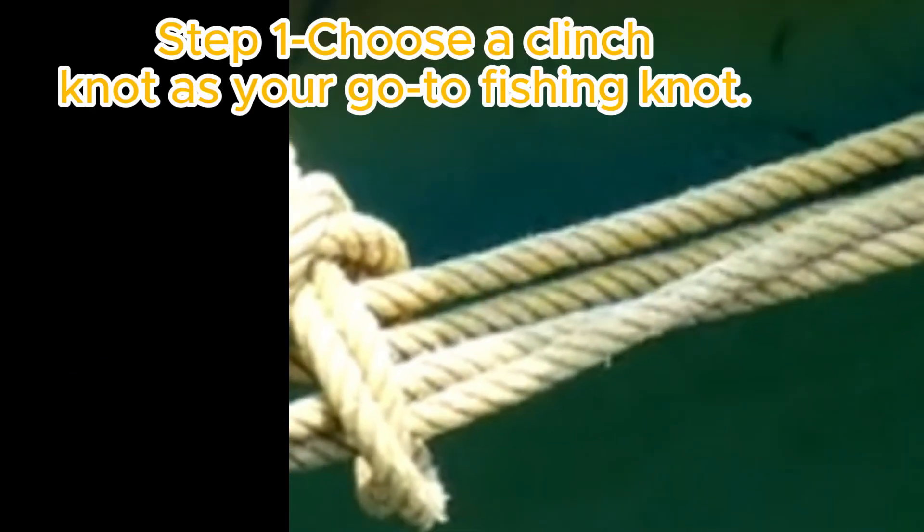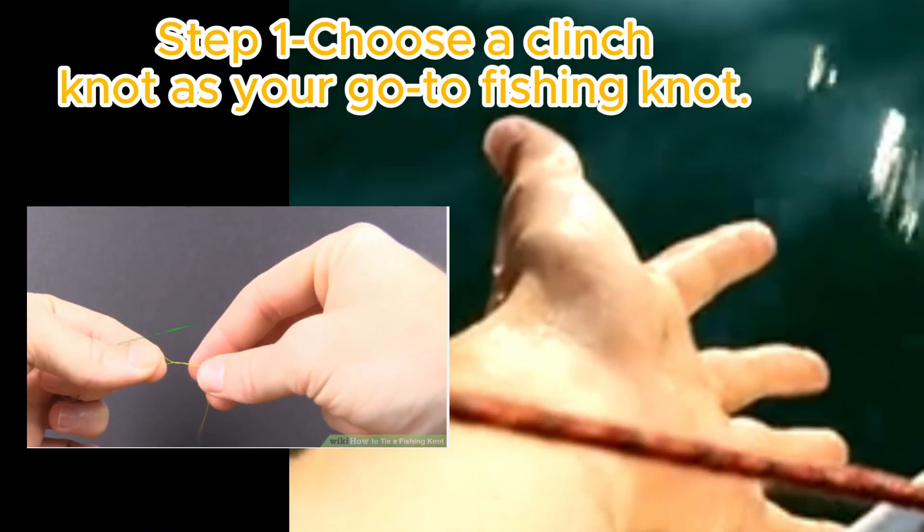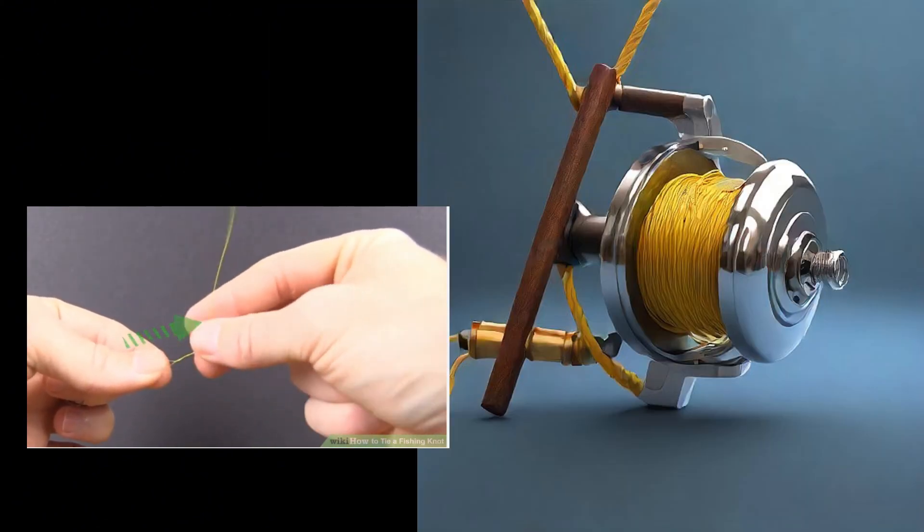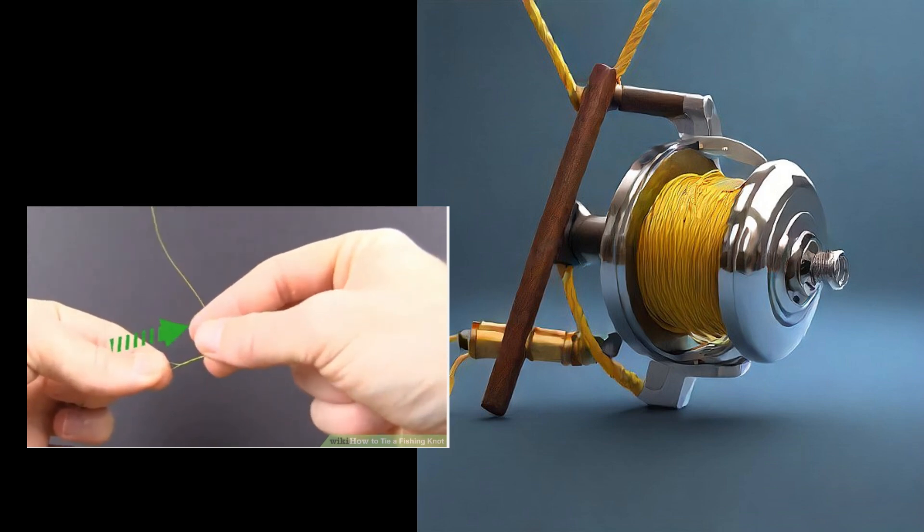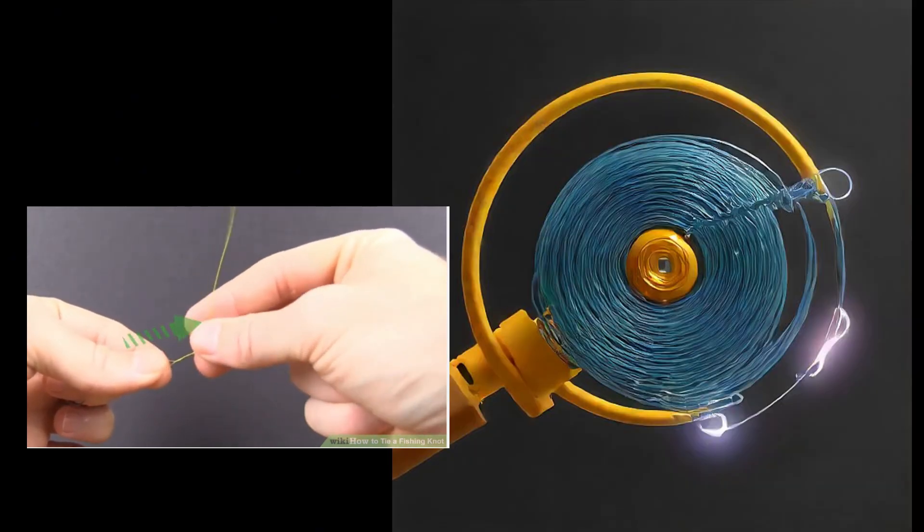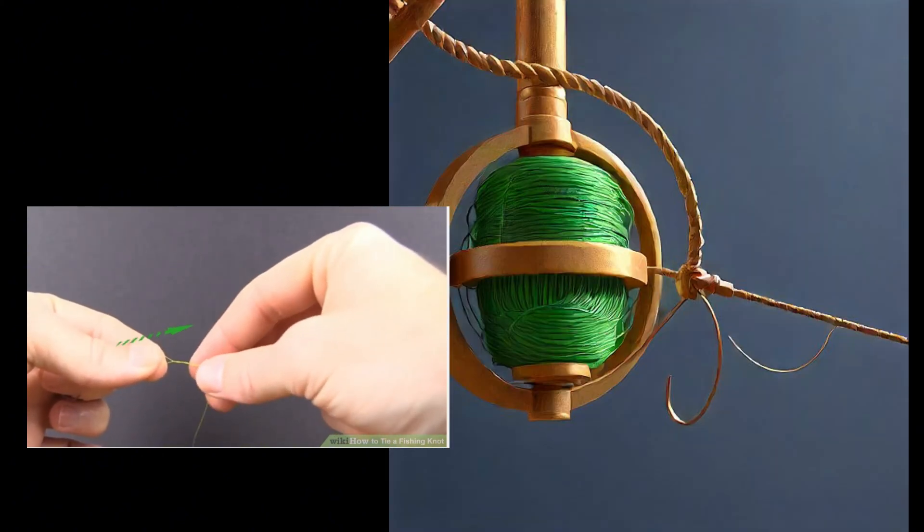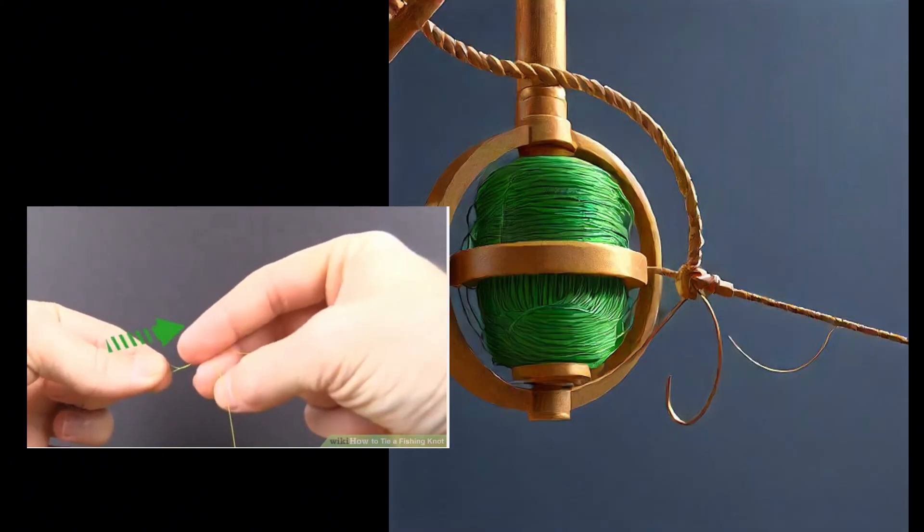Method 1: Clinch Knot. Step 1: Choose a clinch knot as your go-to fishing knot. Thread the end of a fishing line through the eye of the hook. Leave 4 inches (10 cm) of tag end excess line on the right and leave a gap above the hook eye. Use this thread to make 5 to 7 wraps around the line.